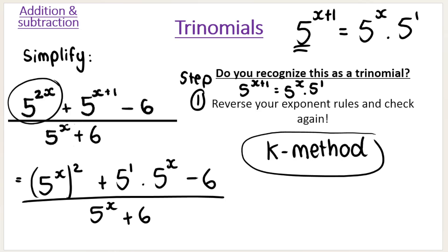And instead of saying 5 to the power of 2X, you're going to rewrite that as 5 to the power of X multiplied by 2. So reverse the exponent rules, break it up.